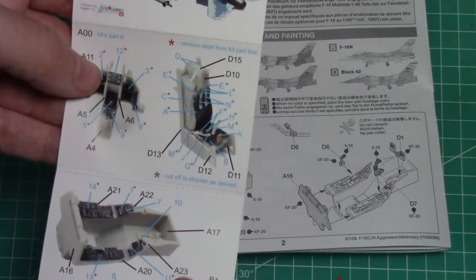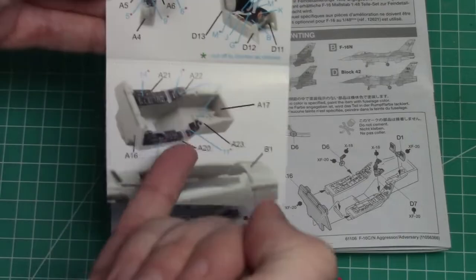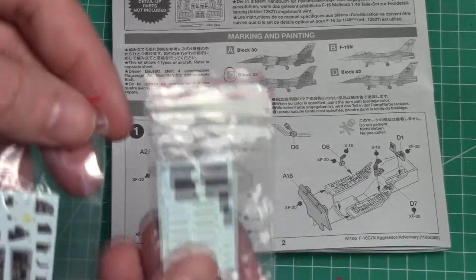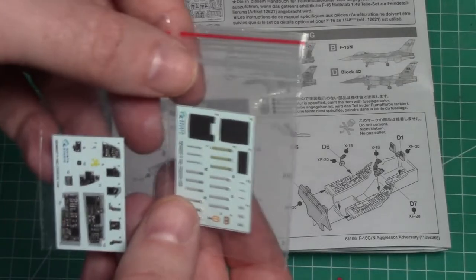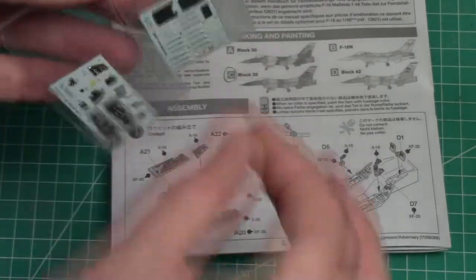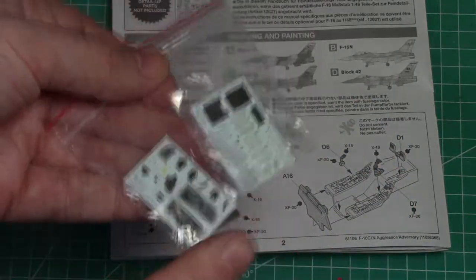Now to make it a little bit easier we've got the Quintus Studio set right here and as you can see it comes with a seat, a tub, and the instrument panel. Basically you get these 3D printed pieces and just dip them in water, it releases them, and then PVA glue down which we'll show you a little bit later on.